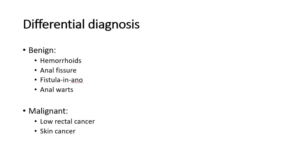For differential diagnosis, the main benign differentials include hemorrhoids, anal fissure, fistula-in-ano, and anal warts. Whilst malignant disease differentials include a low rectal cancer or a skin cancer.